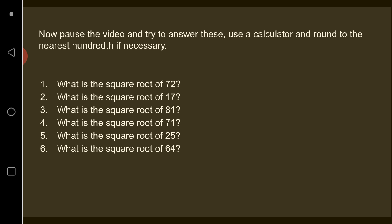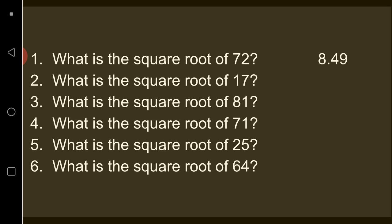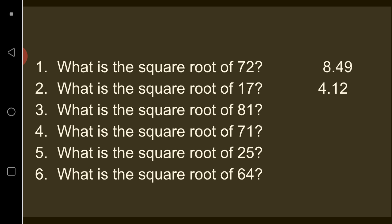Okay, now that you've done that, let's see if you got the correct answers. Number one was 8.49. Number two was 4.12. Number three was 9. Number four was 8.43. Number five was 5, and number six was 8. Comment down below how many you got right out of six and I will reply telling what your score would have been if it was an actual test.